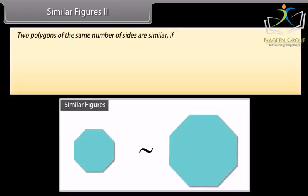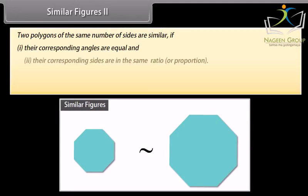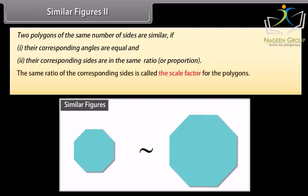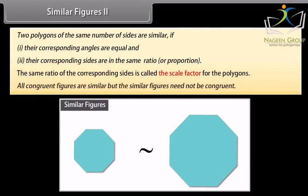Two polygons of the same number of sides are similar if: one, their corresponding angles are equal, and two, their corresponding sides are in the same ratio or proportion. The same ratio of the corresponding sides is called the scale factor for the polygons. All congruent figures are similar, but similar figures need not be congruent.